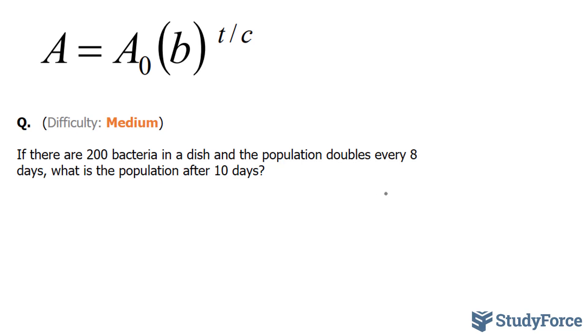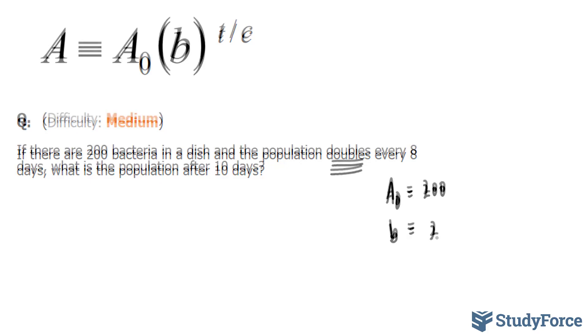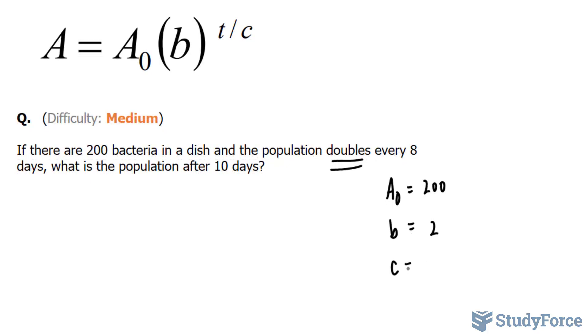So our initial value, A₀, is equal to 200, and the population doubles, which means that our b value is 2. Our c value is equal to 8.